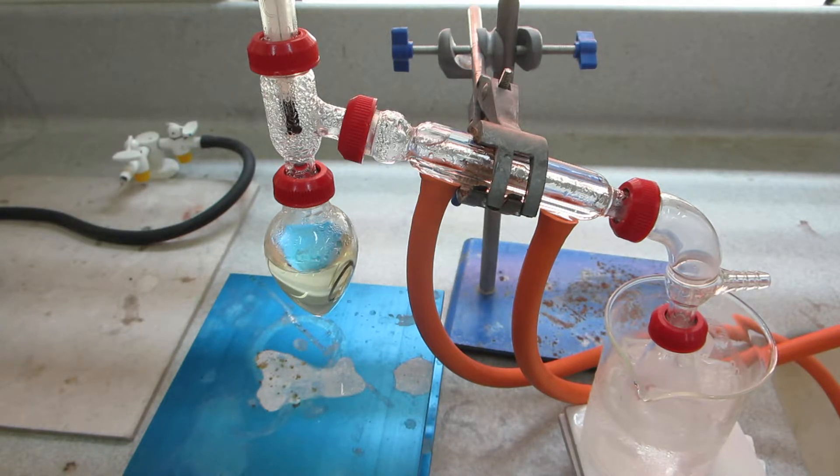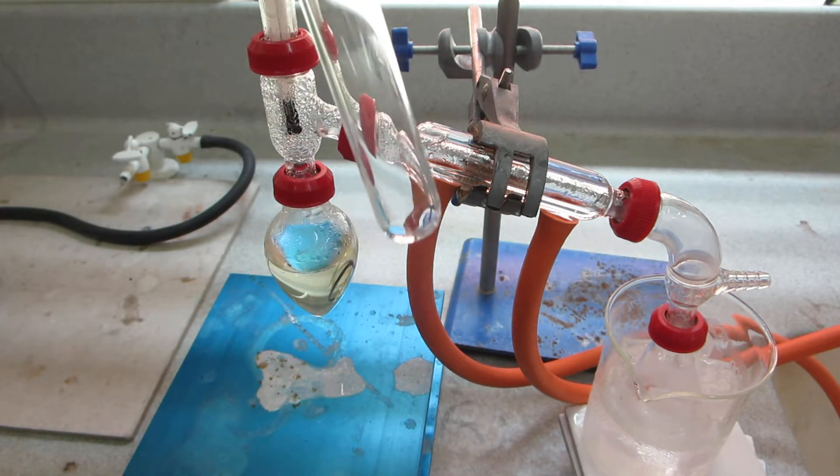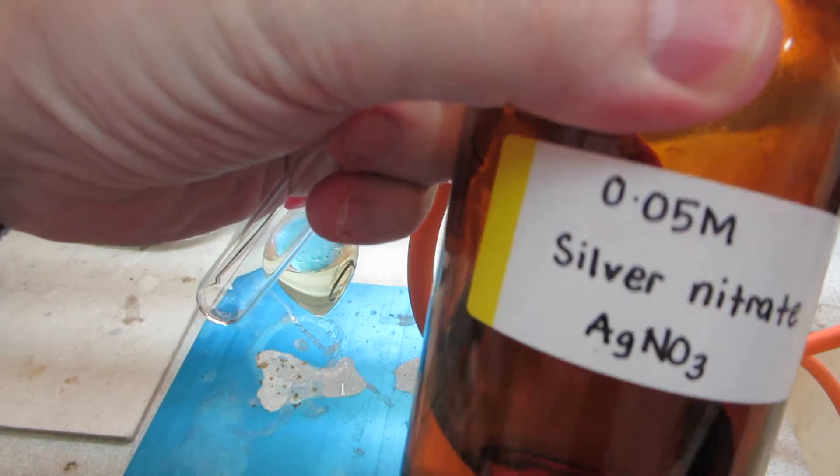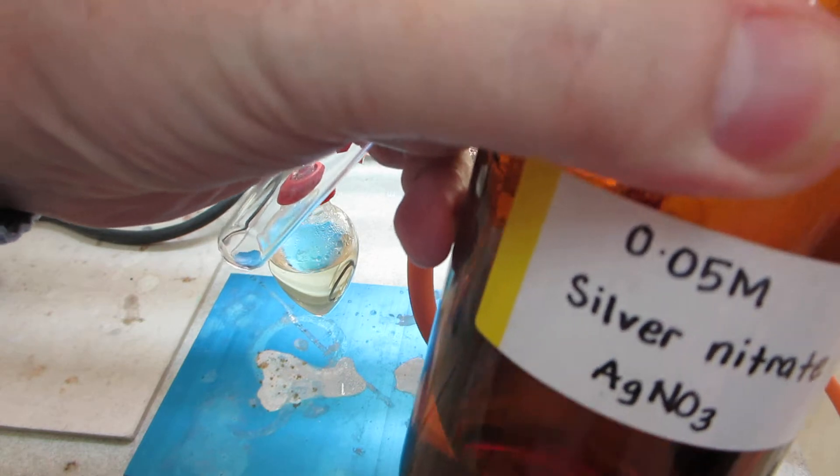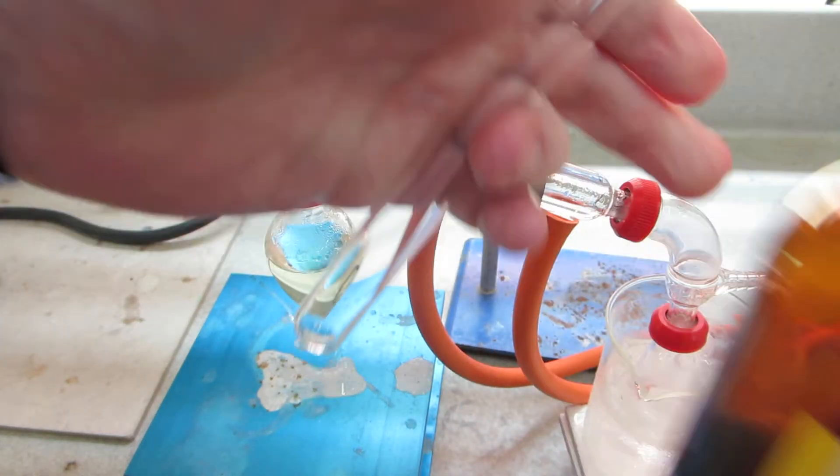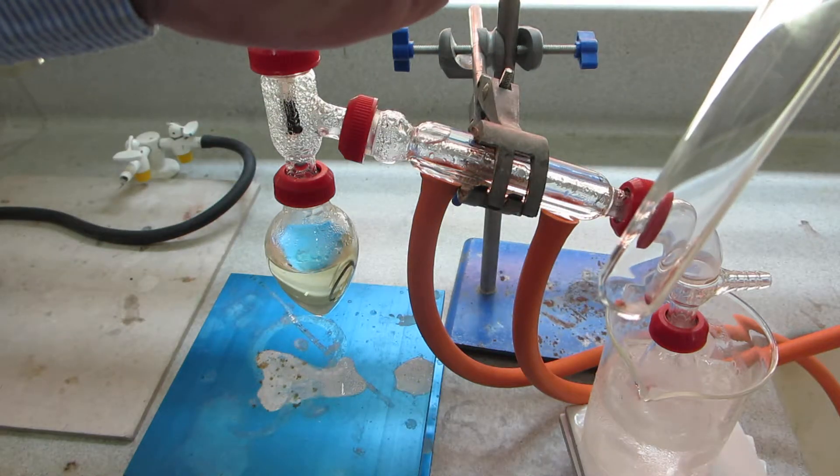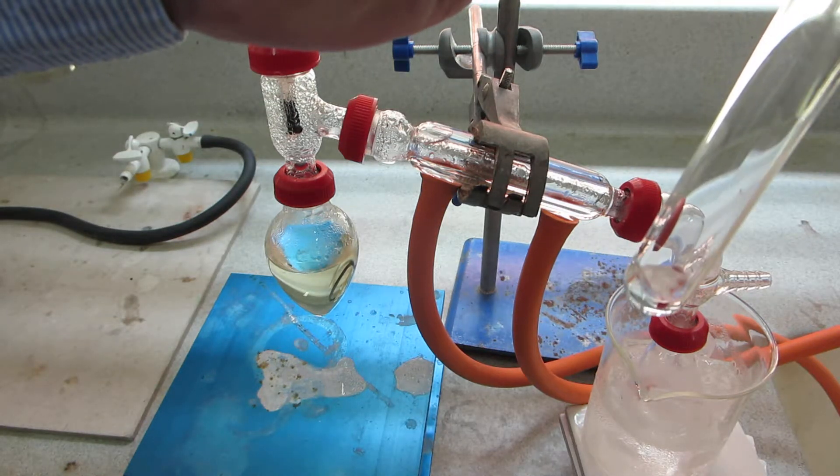In order to do that we need to prepare our Tollens reagent. This will of course be carried out in a test tube at test tube scale, and the first thing we need is about a mil, or one centimeter cubed, of 0.05 molar silver nitrate. Well, one to two mils should suffice.